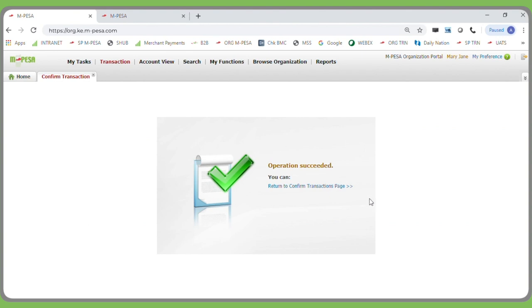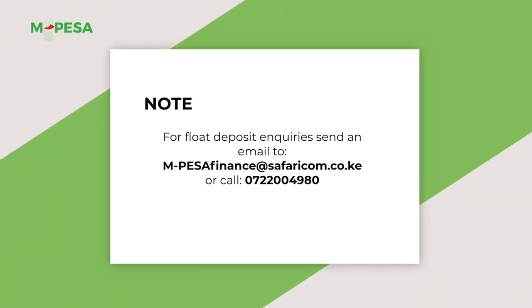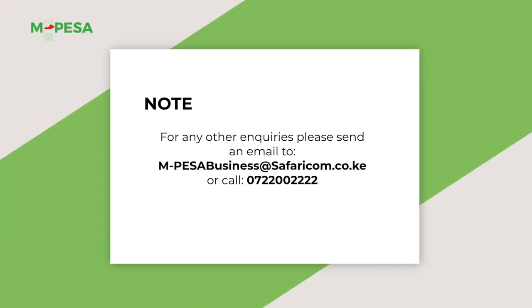Once submitted, the funds will move from the working account or MMF to the utility account, and the business operator will now be ready to make payments. For support and escalation: for float deposit inquiries, send an email to m-pesafinance@safaricom.co.ke or call 0722-004980. For any other inquiries, send an email to m-pesabusiness@safaricom.co.ke or call 0722-002222.